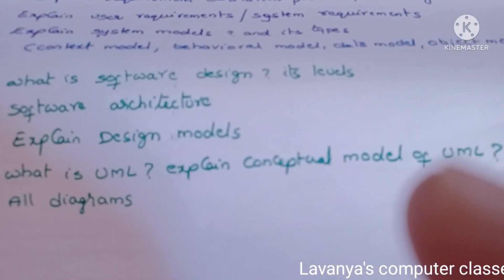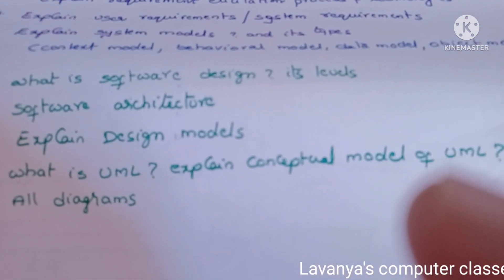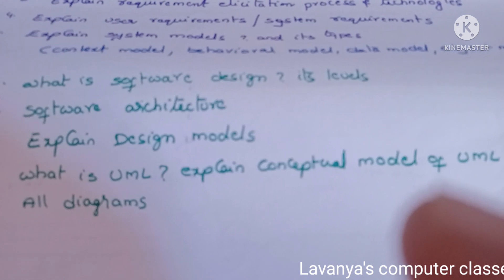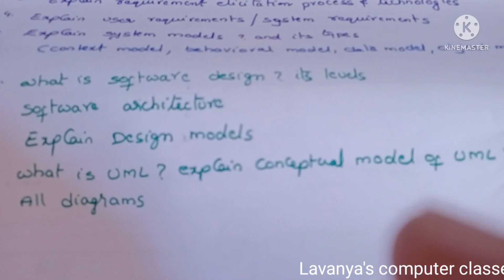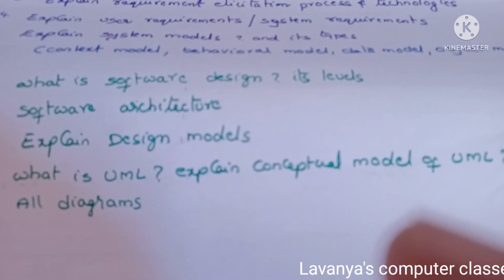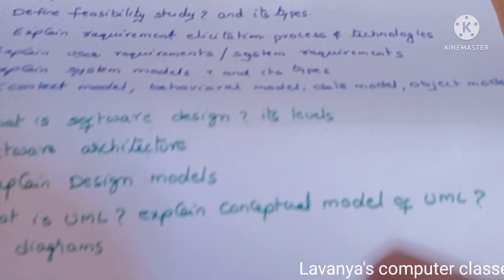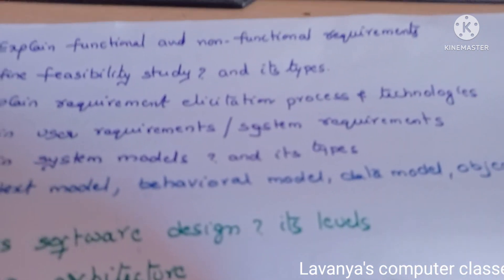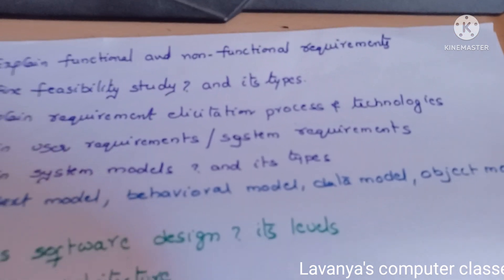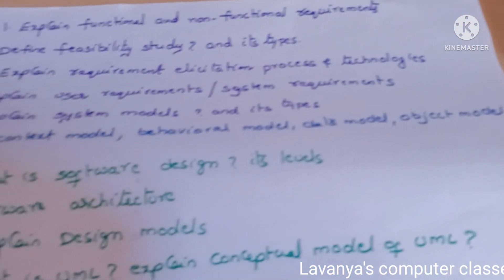So in unit three: what is software design and its levels, software architecture, design models, and UML with different types of diagrams — these are the questions in unit three.